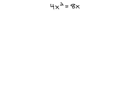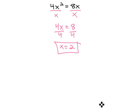The wrong way, which I see people do all the time, is they divide both sides by x, because that gives us 4x equals 8, and then divide by 4, and that gives us x equals 2. This is wrong.